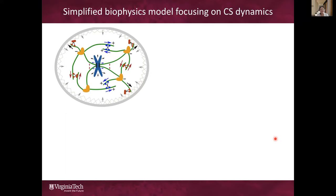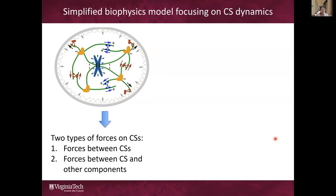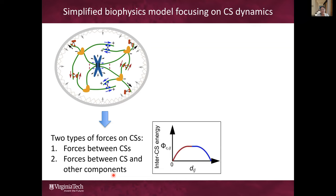Both rescues must rely on the same set of molecules and cellular components that mediate normal spindle assembly. We really want to understand all these processes under the same mechanistic framework using the same model. To answer this key question, we chose to build a simplified biophysical model which focuses just on the dynamics of the centrosomes and the overall mechanical forces that drive their motion in the cell. We lump all the forces into two types: forces between pairs of centrosomes, and the force between a centrosome and the other components in the cell, using effective potential energies to characterize these forces.